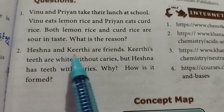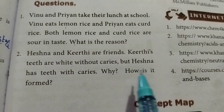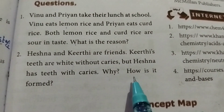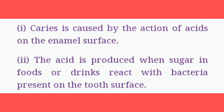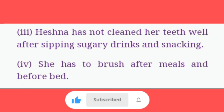Second question: Hesna and Kirti are friends. Kirti's teeth are white without caries, but Hesna has teeth with caries. Why and how is it formed? Caries is caused by the action of acids on the enamel surface. The acid is produced when sugar in food or drinks reacts with bacteria present on the tooth surface. Hesna has not cleaned her teeth well after having sugary drinks and snacks. She has to brush after meals and before bed.